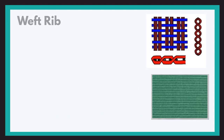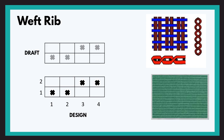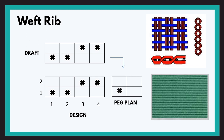Now let us study the weft rib structure. Here the first and second ends pass over the first pick and below the second pick. The third and fourth ends pass below the first pick and above the second pick. We then mark the draft and pick plan. In the diagram you can see that strands or ribs appear in the weft direction — this is the pattern produced in the weft rib structure.